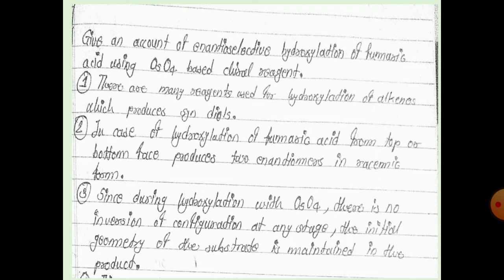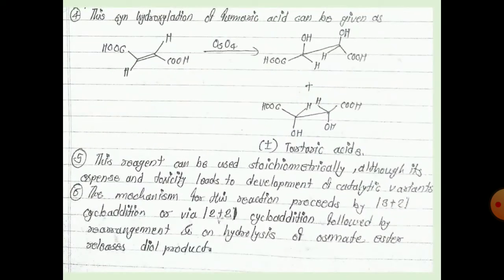The initial geometry of the substrate is maintained in the product. This is the syn-hydroxylation of fumaric acid. The fumaric acid structure has two COOH groups in the trans configuration — the carboxylic acid groups are on opposite sides.